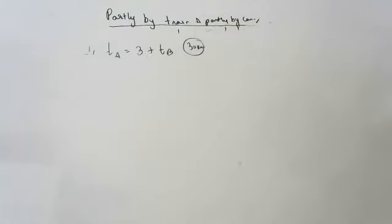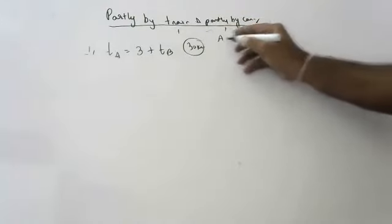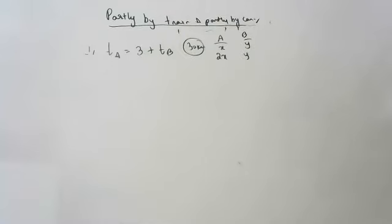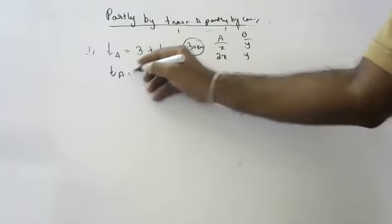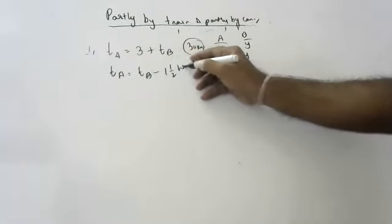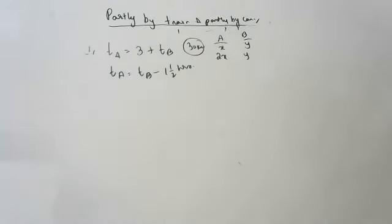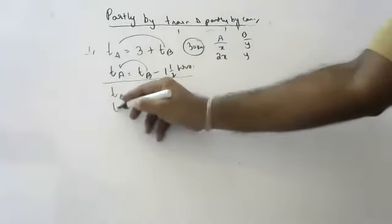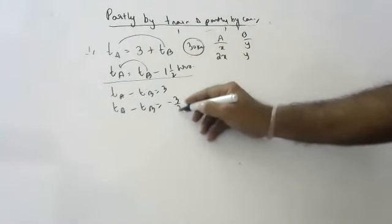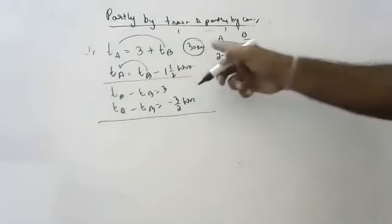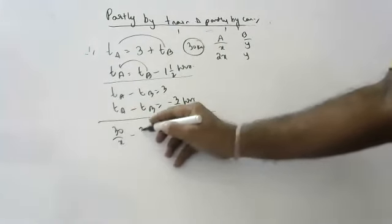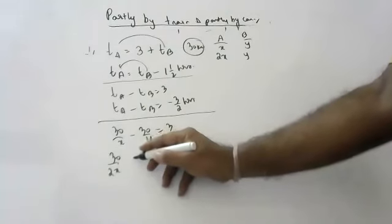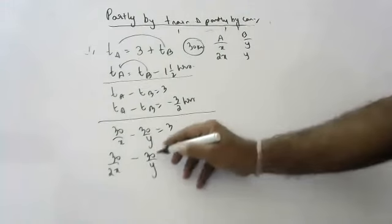Last question: A takes 3 hours more than B to cover a distance of 30 km. But if A doubles his speed, he is ahead of B by 1 and a half hours. First equation: 30/x minus 30/y equals 3. Second equation: 30/(2x) minus 30/y equals minus 3/2, since doubling speed means A arrives earlier than B.